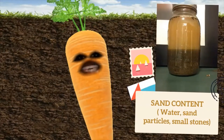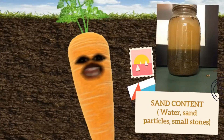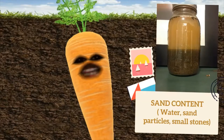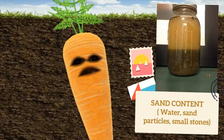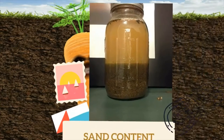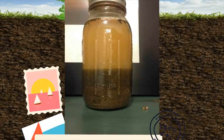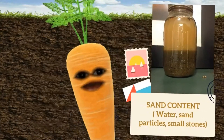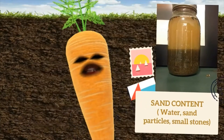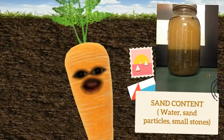And the next one is the sand content. Sand content has 3 layers: water, sand particles, and also small stones. These are the contents of the soil.